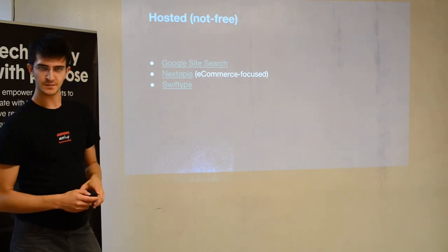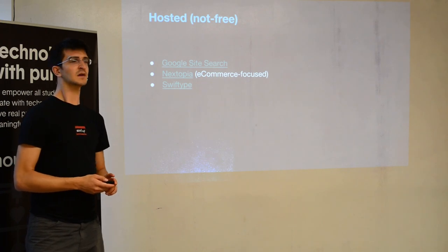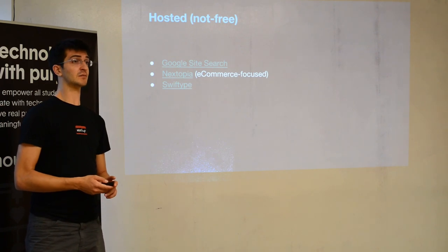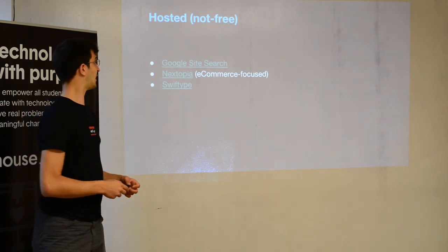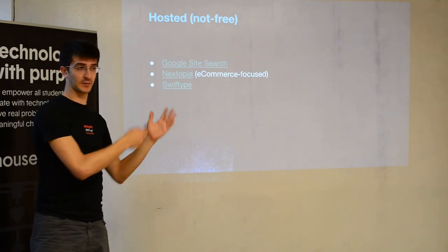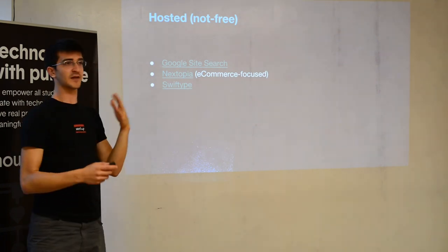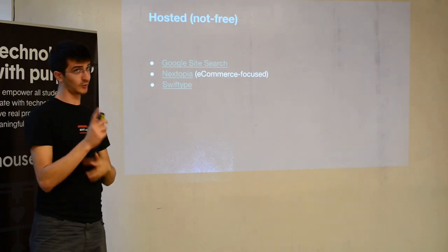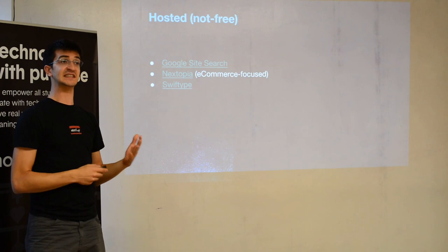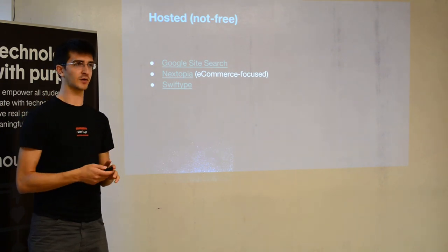Algolia and Swiftype both have faceted search — really sophisticated stuff. If you're willing to pay you can get things like previews of items, recommendations based on similar search results. These paid services let you build whatever you want because they give you API access. They can give you very high levels of control, search volume, and analytics.